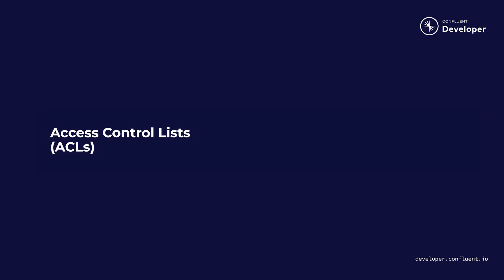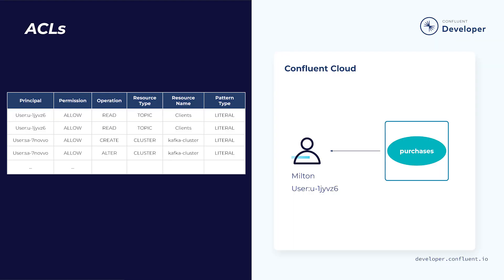None of that extra effort is necessary with Confluent Cloud. Instead, there are two methods for authorizing your identities: access control lists, or ACLs, and role-based access control, or RBAC. ACLs are tables that list identities and what they can do or see within Confluent Cloud — the resources they can access and the permissions they have. For example, the user Milton can access the purchases topic to consume events. The permissions are tied to each identity and linked to the access they have been given for each resource.